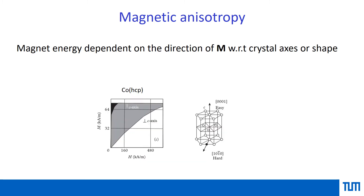Another example can be seen for cobalt, which crystallizes in the hexagonal close-packed structure, HCP. In this one, the high-symmetry axis for hexagonal close-packed structures is usually represented along the C axis, the Z direction. If you look at the magnetization, it saturates much more easily along the C direction. Within the A-B plane, the magnetization requires much more field to get saturated, meaning that along the C direction it saturates easily — it is the easy direction — and the direction perpendicular to the C axis within the plane is the hard direction.